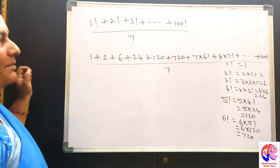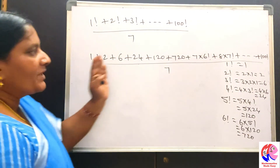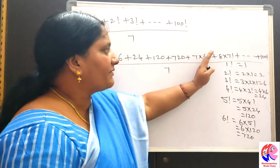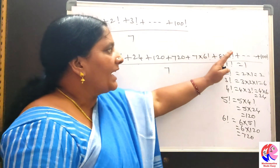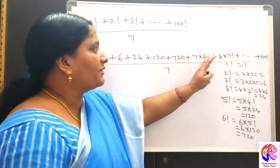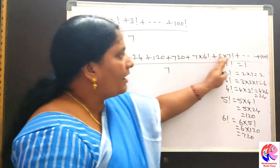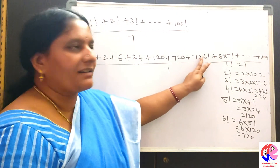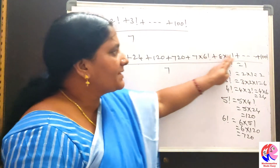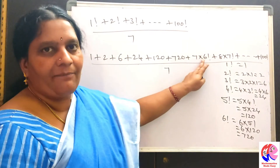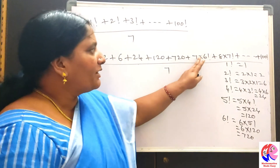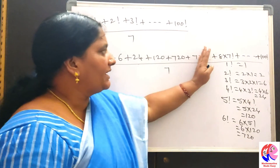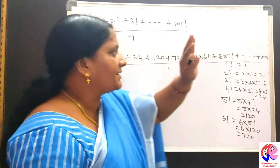When this sum is divided by 7, from 7 factorial onwards — 7 factorial is 7 into 6 factorial, 8 factorial is 8 into 7 factorial — all these terms have 7 as a factor. So all these terms are divisible by 7, and whenever you divide these terms by 7 we get remainder 0. So we need not consider these terms.